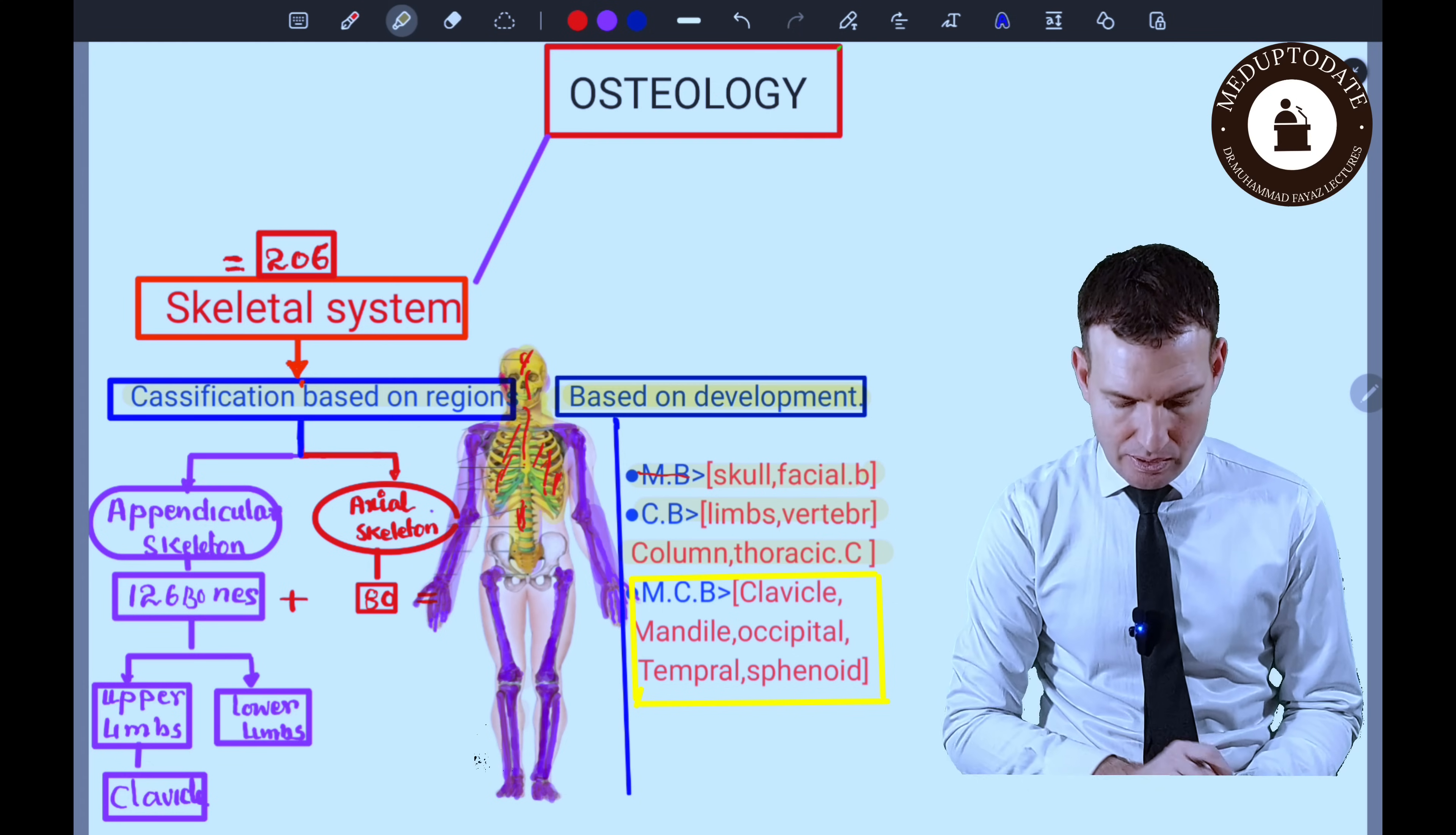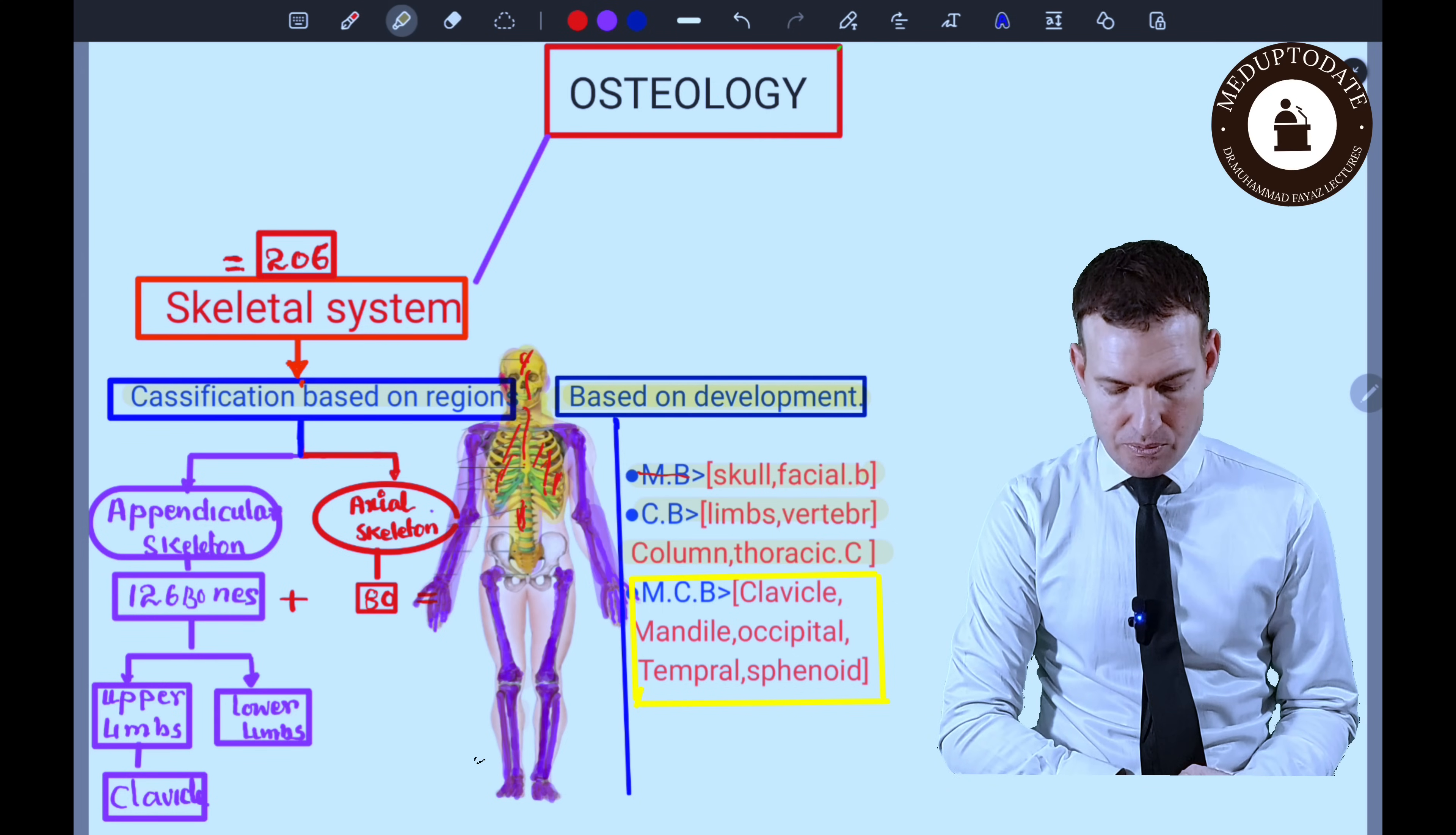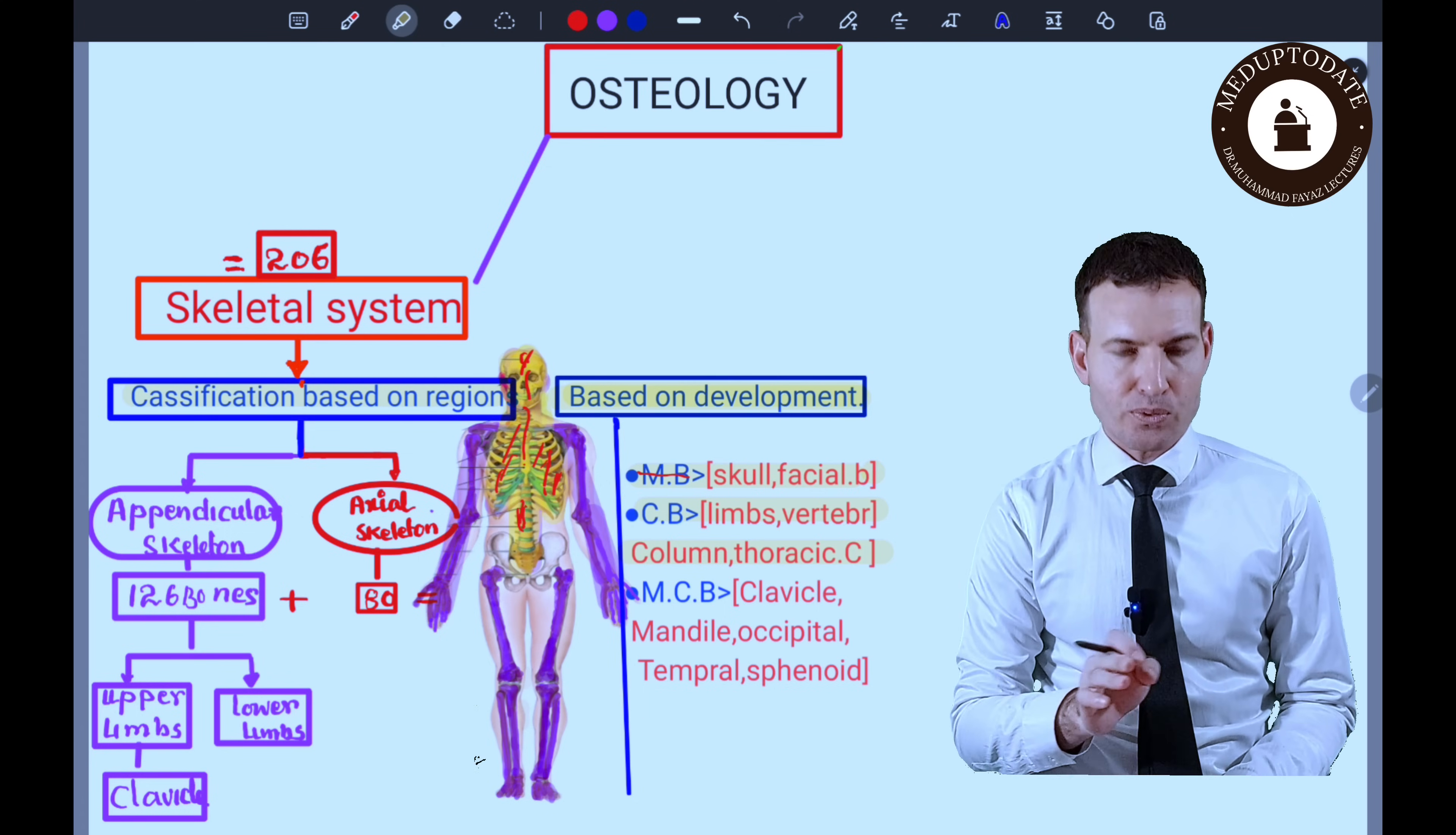Then we have the next one: mandible, occipital, and temporal sphenoid also have mixed origin of ossification.